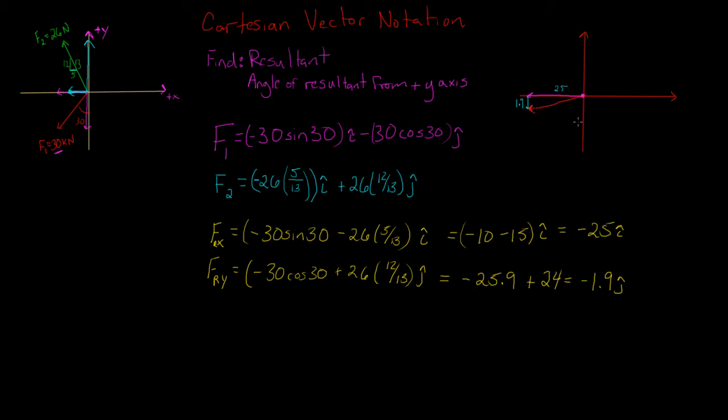We can figure out the magnitude of the resultant. So our resultant magnitude, Fr, is going to be equal to the square root of Frx squared plus Fry squared.